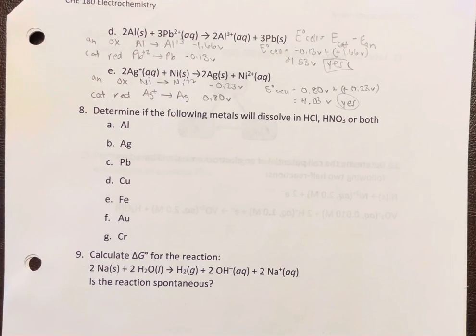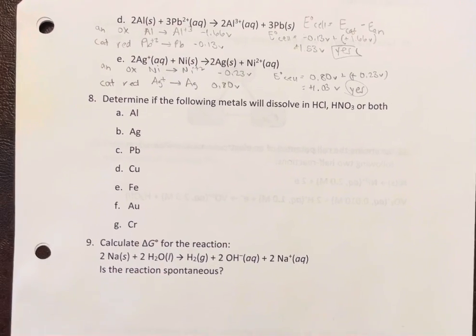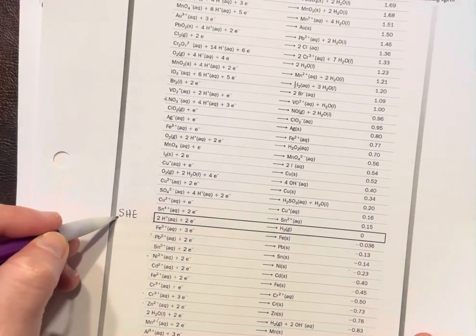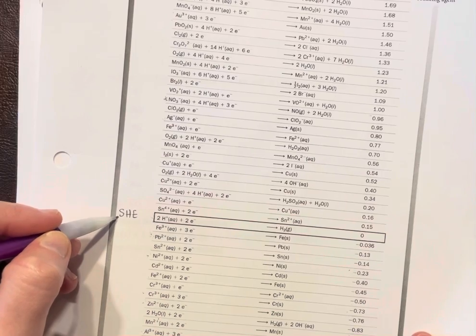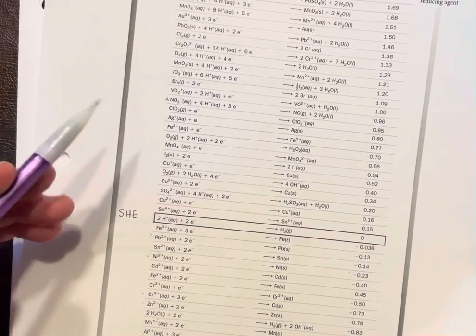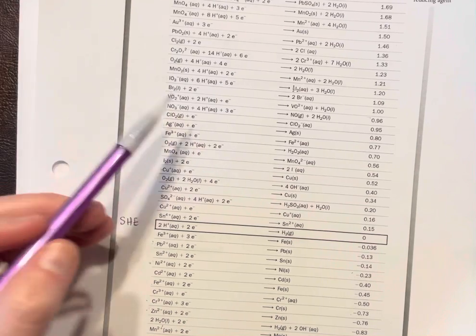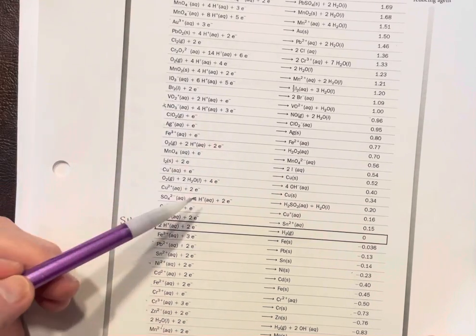All right, now here we're going to determine what we can dissolve metals in. All right, so this is really easy. We need to find, so for HCl we use the SHE, for nitric acid we use this one because remember nitric acid is a strong acid so it's going to completely dissociate in water.